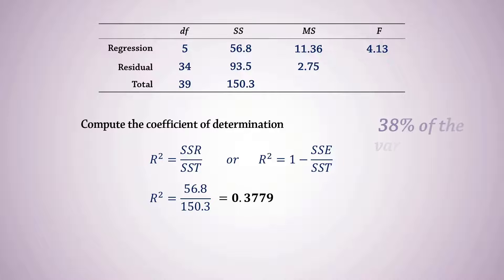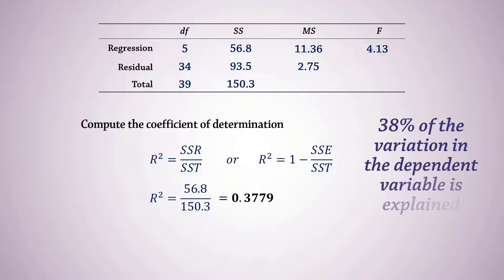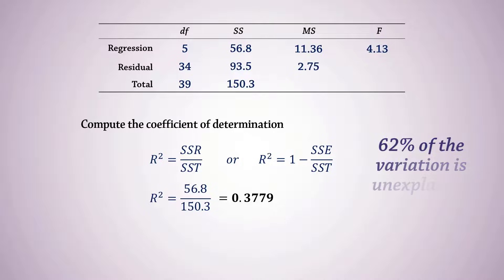That is, about 38% of the variation in the dependent variable can be explained by the variation in the independent variables. The remaining 62% is not explained by the model.